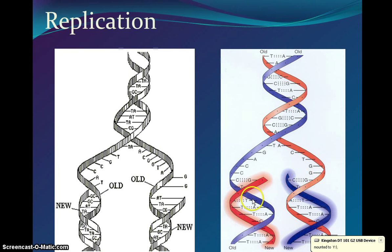When the DNA unzips, as you can see in this picture to the right, there are different hydrogen bonds between the different base pairs. Between cytosine and guanine there are more hydrogen bonds than between adenine and thymine. So when an enzyme comes in to unzip the DNA so it can replicate, it's going to break the bonds between adenine and thymine first because it's an easier bond to break and takes less energy than breaking the bond of cytosine and guanine.